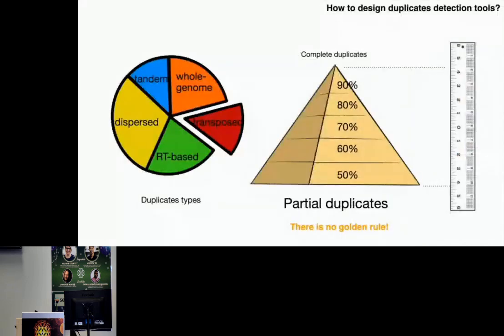This, to some extent, impacts future bioinformaticians designing detection tools, either by duplication types or by duplication similarity cutoffs, because we know there are no golden cutoffs to distinguish complete duplicates from partial duplicates.